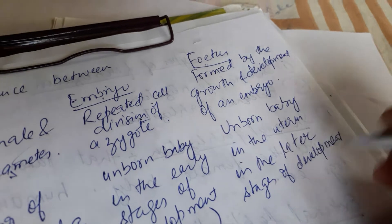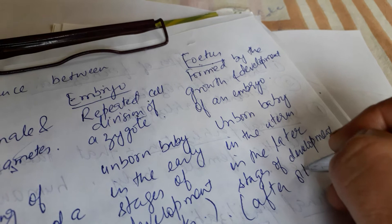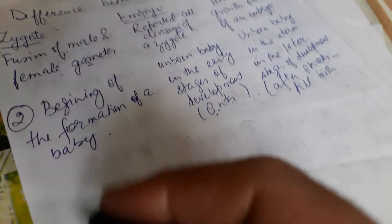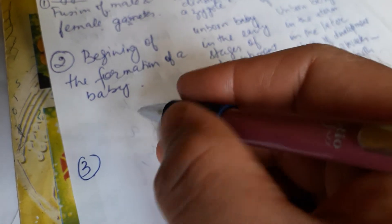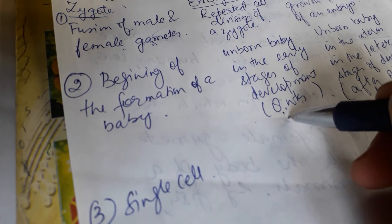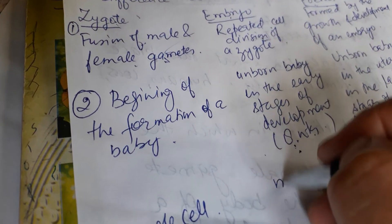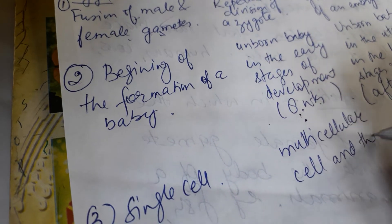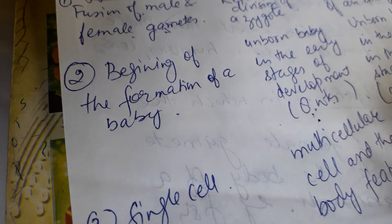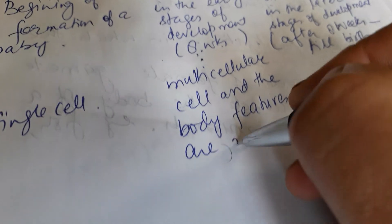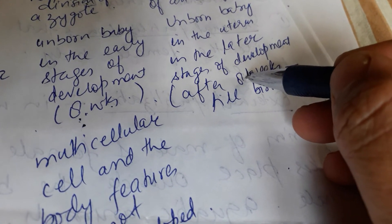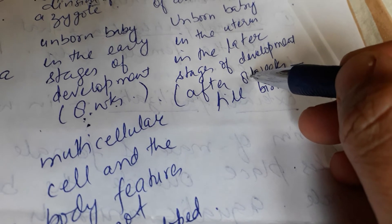A fetus represents the later stages of development, that is after eight weeks till birth. Third difference: a zygote is a single cell. An embryo is multicellular and the body features are not well developed.